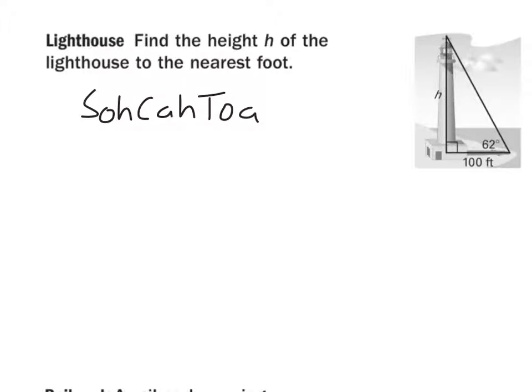I write down SOHCAHTOA. Now I look at the diagram and I say, relative to my acute angle I know, relative to that 62 degree angle, h is what I'm solving for, so which side is that? Opposite, adjacent, or hypotenuse? H is opposite the 62 degree angle, so I'm going to be using O. Well next, 100 feet, is that opposite, adjacent, or hypotenuse to that 62 degree angle? Adjacent. It is adjacent. So I'm using O and A, O and A, you look up at SOHCAHTOA, which item uses O and A? The tangent does. Tangent uses O and A.